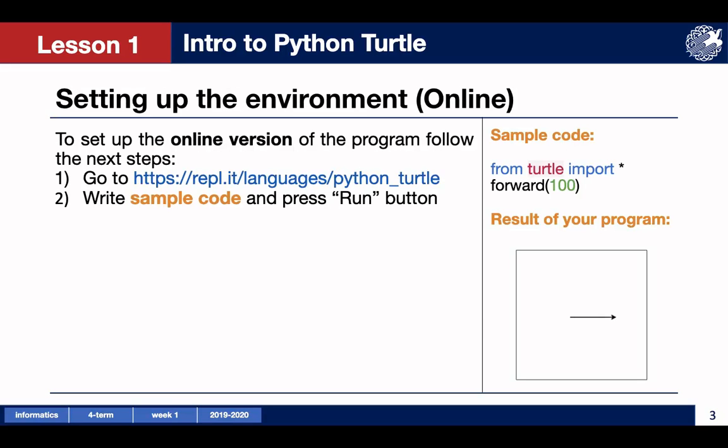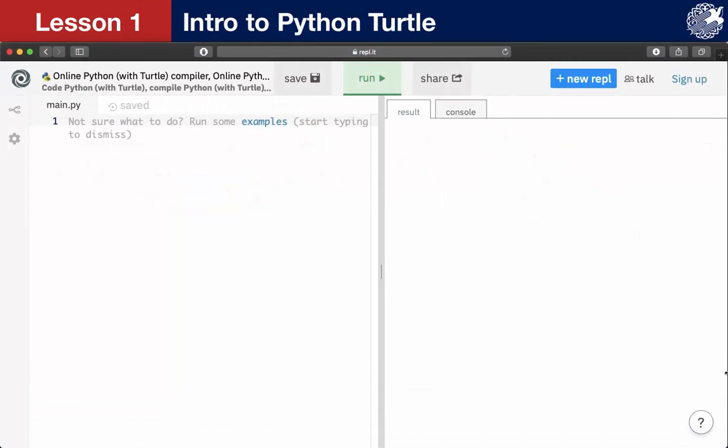Let's start by setting up the environment. We have two options available. To set up the online version of the program, follow the next steps: go to this link, write sample code which is given in the presentation, and then press the green run button.